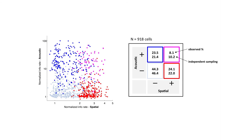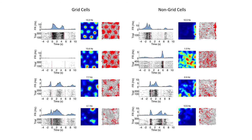What about grid cells? Here's an example of a grid cell recorded in a real environment and that same cell during the sensory navigation task — there are multiple fields. These two cells on the upper left were from the same module recorded at approximately the same time: one had beautiful fields in the acoustic task and the other didn't, which is an interesting observation. Border cells also have firing fields in this acoustic navigation task, and we looked at other non-spatial cells as well.